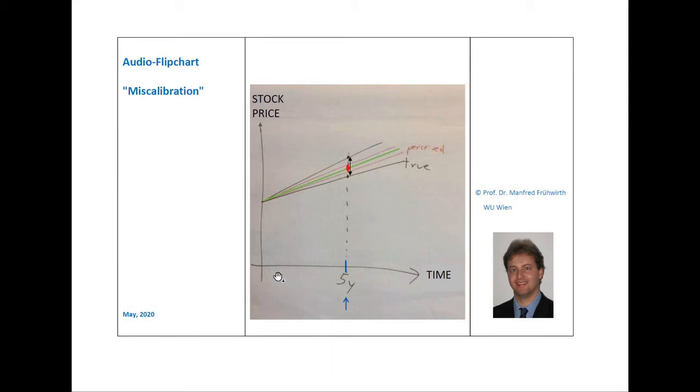So, for each point in time, there is a lower boundary and an upper boundary. And the future stock price will be within that interval with the given probability P.